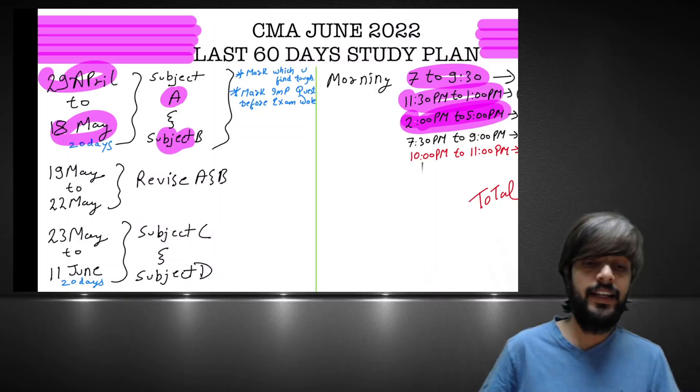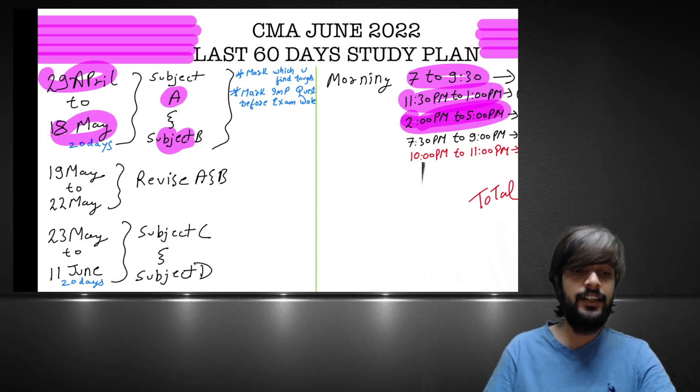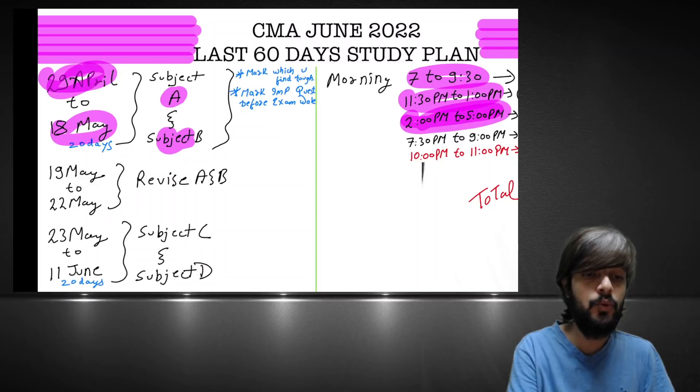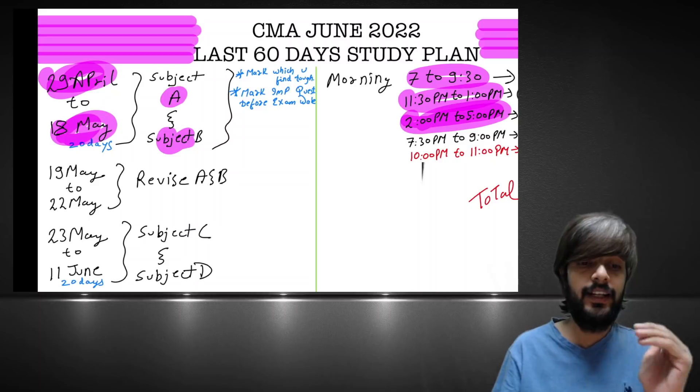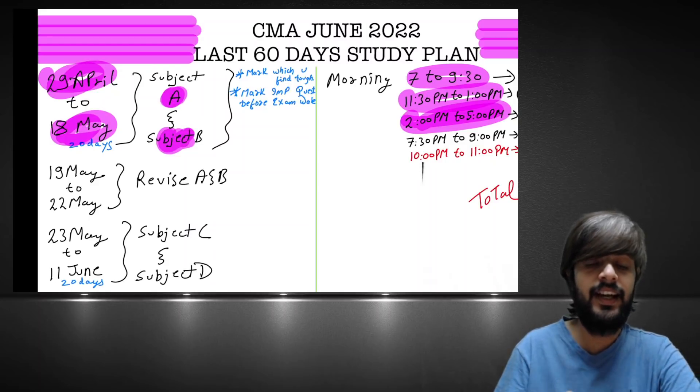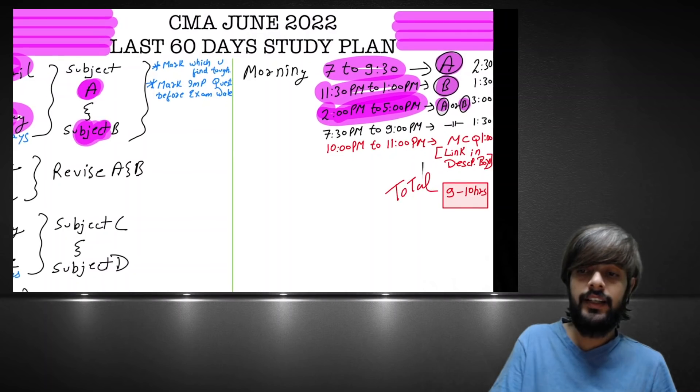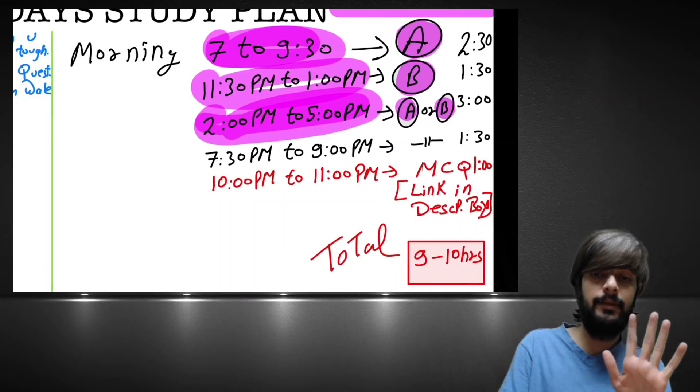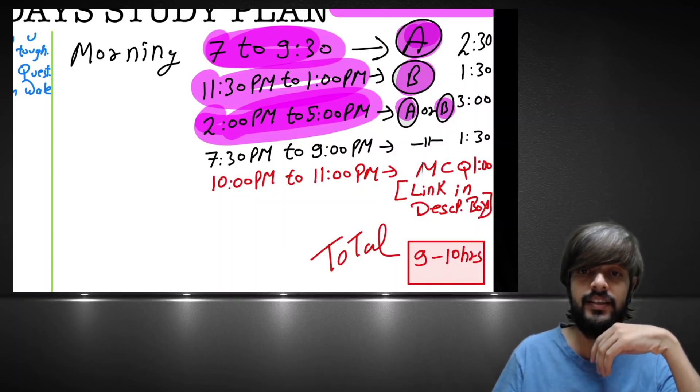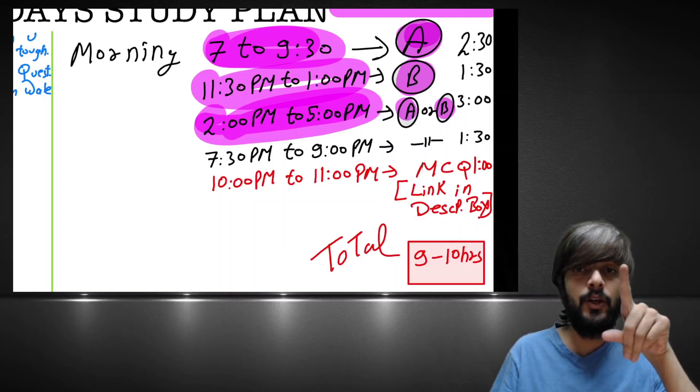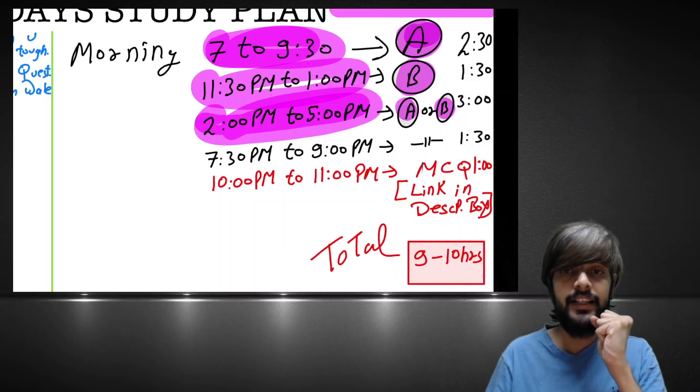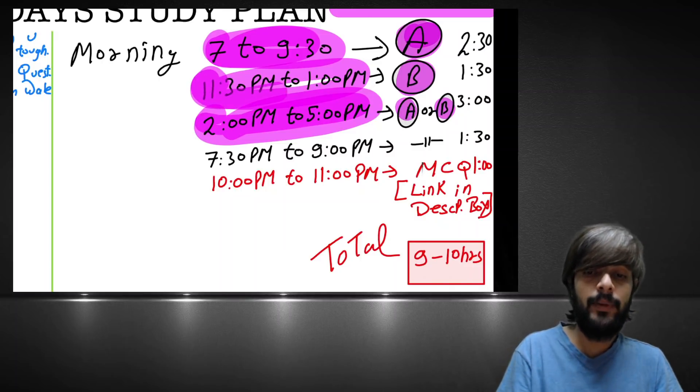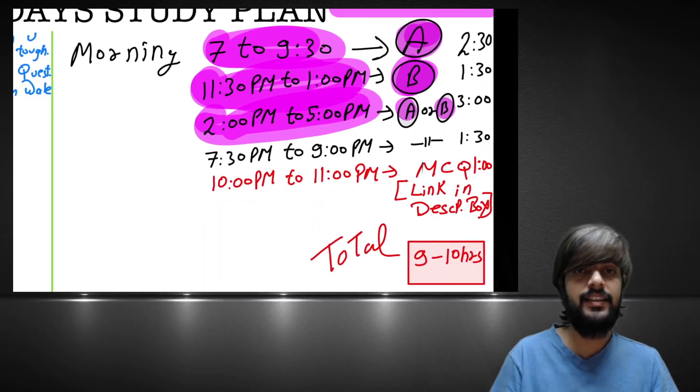So yes, we have around 60 days in our hand. You can divide the 60 days into 20 days first. So from 29th April to 18th May, a 20-day slot is there. In that 20 days, you complete two subjects, subject A and subject B, whatever may be the case. The timing you can refer, I used to refer this timing 7 PM to 9:30 AM early morning for 2.5 hours. I used to study law subject. Because early morning, we are able to grasp theory much quicker and it is very much beneficial. Then from 11:30 to 1:00 PM, you can take any other subject, subject B.